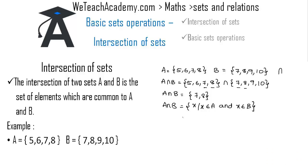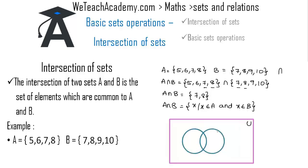Now let us represent A intersection B in the form of a Venn diagram. We draw a rectangle representing the universal set, with two circles representing set A and set B. The common overlapping part contains the common elements 7 and 8. Set A contains the remaining elements 5 and 6, and set B contains the remaining elements 9 and 10.